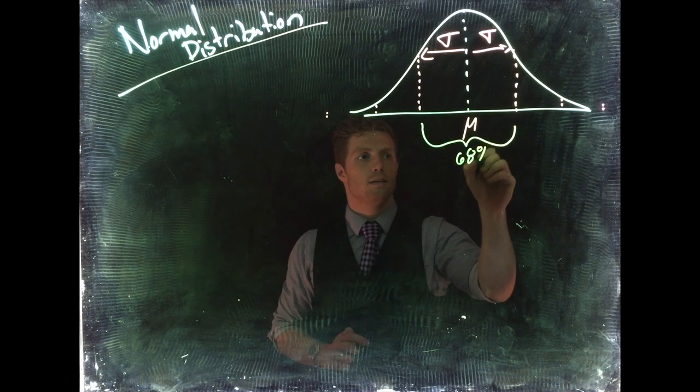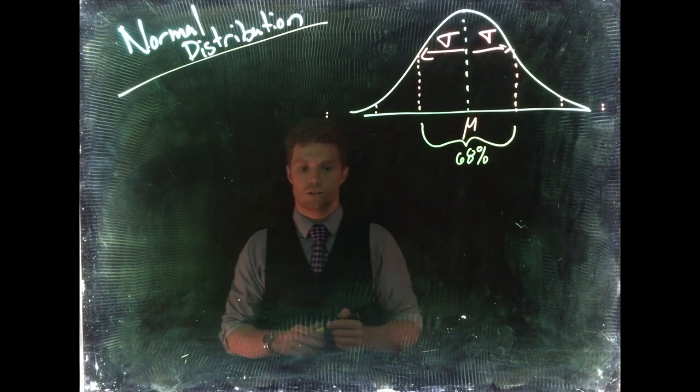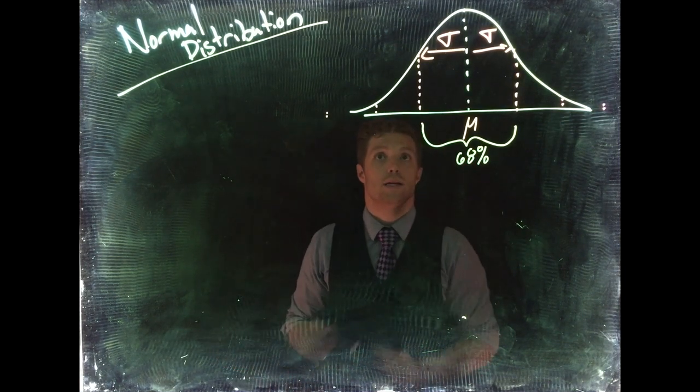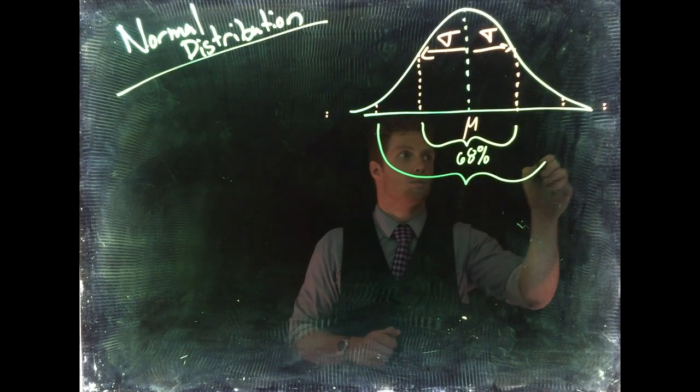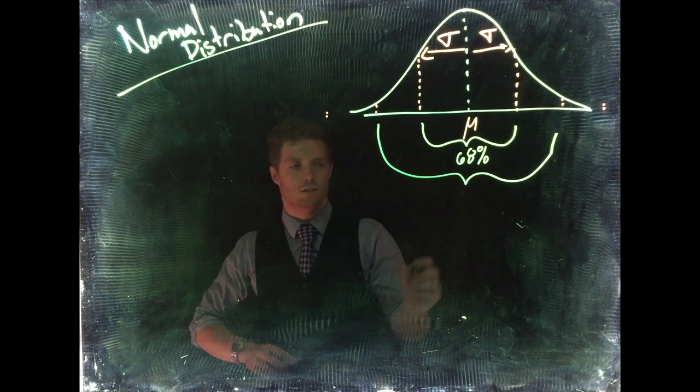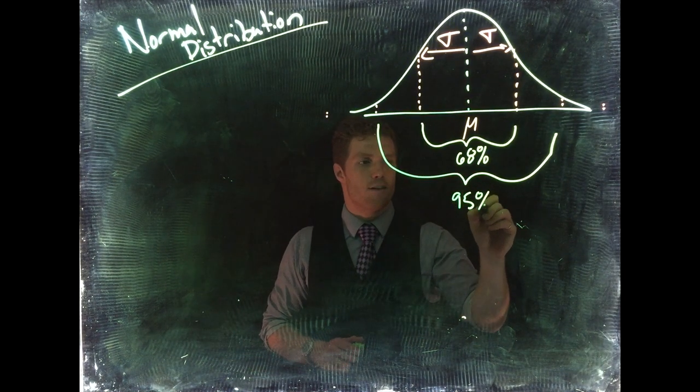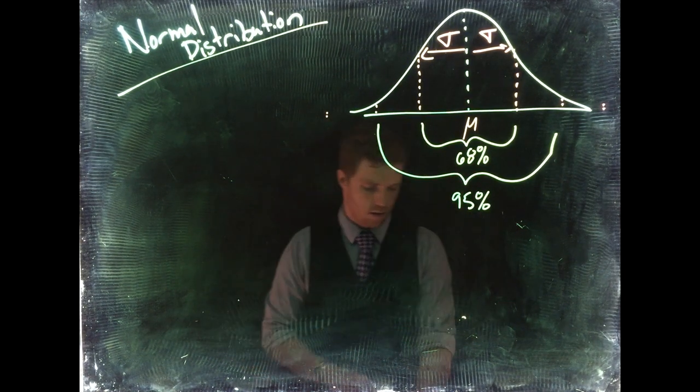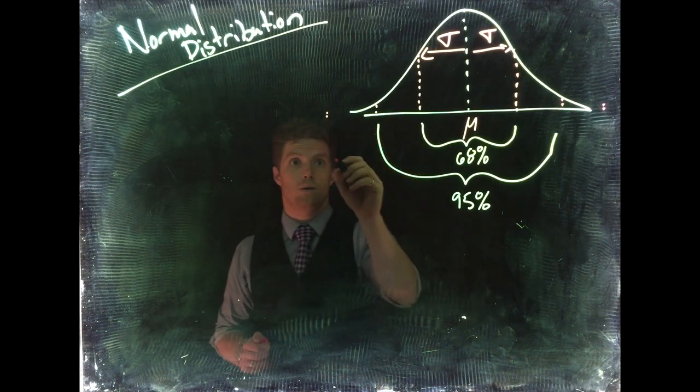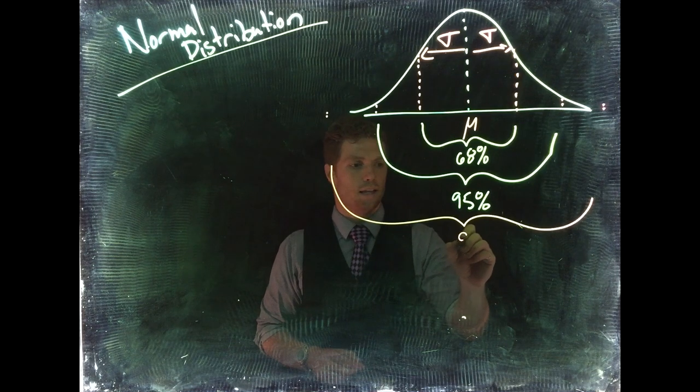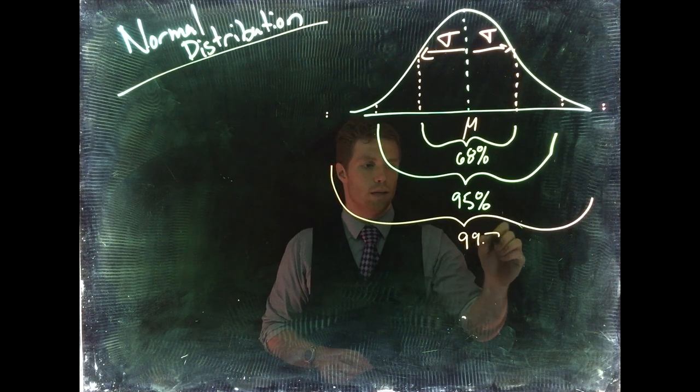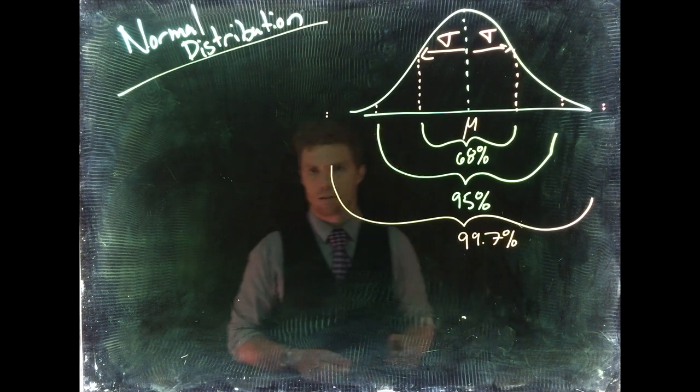We can continue out. We can say, okay, well then how much data is plus or minus two standard deviations? That happens to be 95%. And then, you know, we can keep on going. We can go plus or minus three standard deviations, and that is 99.7%.